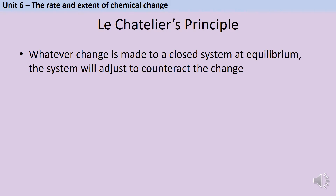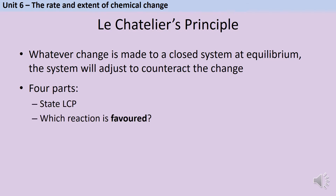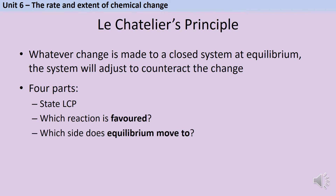Basically, it means whatever we try to do, the reaction is going to try to undo it. All answers to equilibrium questions are going to have four parts. Firstly, state Le Chatelier's principle. Then consider which reaction is favoured — which one is going faster, either the forward or the reverse. Based on that, say which side the equilibrium moves to. And finally, state what the observable change is — what would we see.